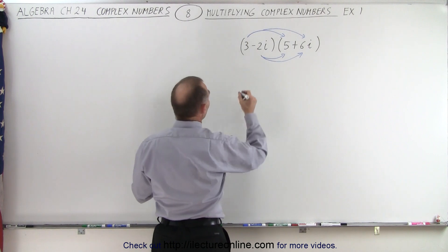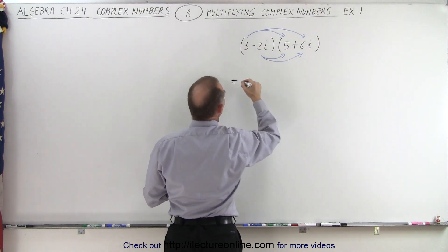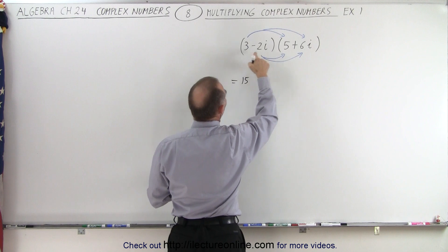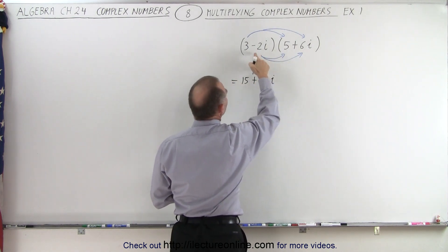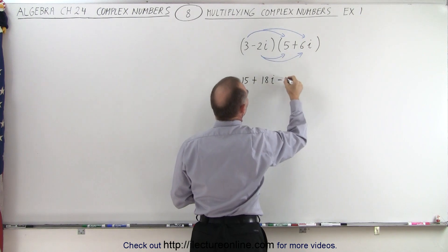So when we multiply, we get the following. You have 3 times 5, which is 15, and 3 times 6i, which is plus 18i, negative 2i times 5, which is negative 10i,